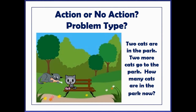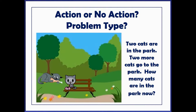In order to help you think about the different problem types, let's look at some example problems. Here's the first problem: two cats are in the park, two more cats go to the park — how many cats are in the park now? Is there an action or no action? Yes, there is definitely an action — more cats are physically being moved to the park. And what is our problem type? Because we want to know how many cats are in the park now, the result is unknown.